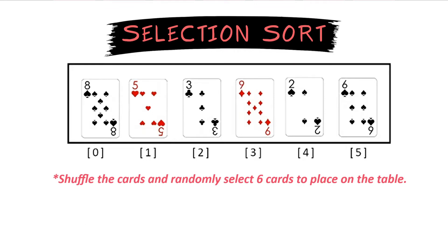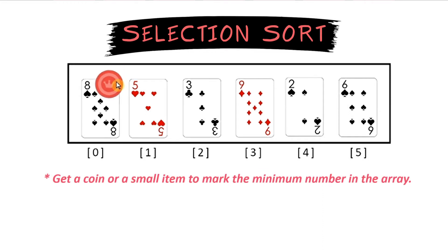Start by laying out a few random cards on your table. Then you'll need a coin or some small item to mark what the minimum item is in the array. Place your minimum marker on the very beginning item in the array which is an 8. This will mark our minimum number in the array.